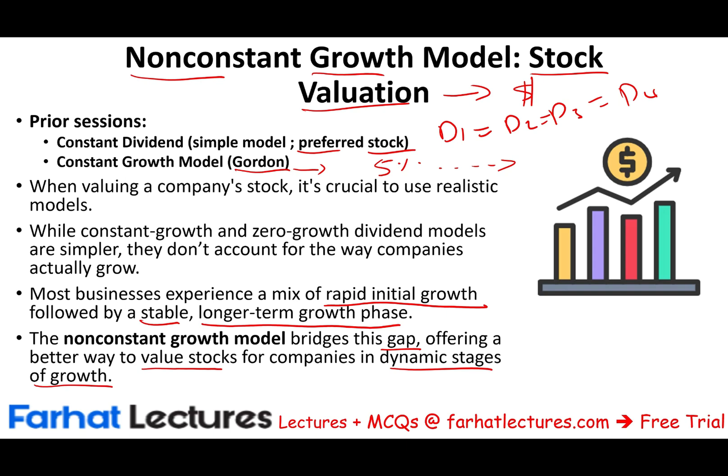The constant dividend model is good for preferred stock. The constant growth model is excellent for stable, mature companies that expect to grow dividend at 5% for the next 15 years. Otherwise, real-world companies fluctuate a lot, so we need another model — the non-constant growth model — which is what we will discuss in this session.